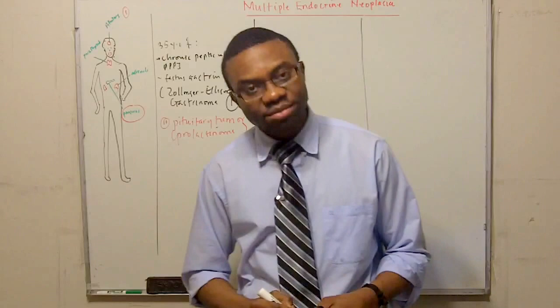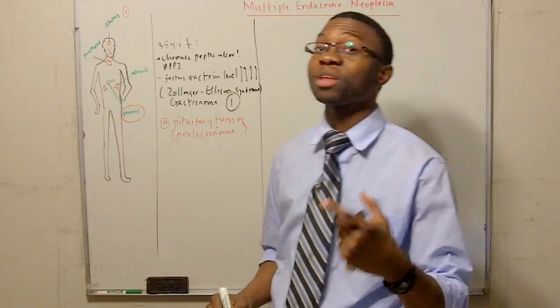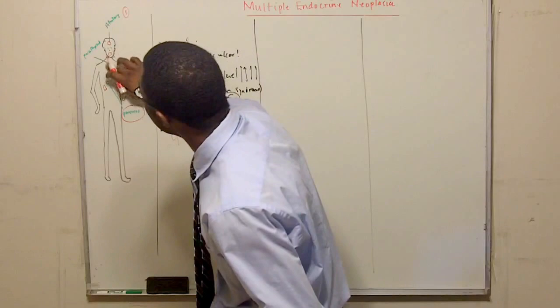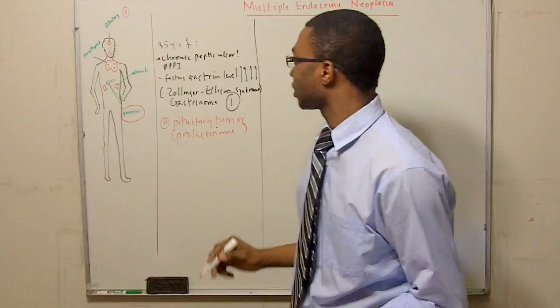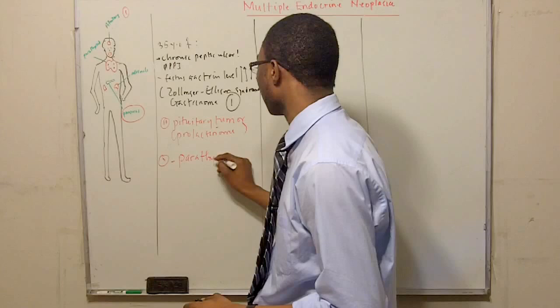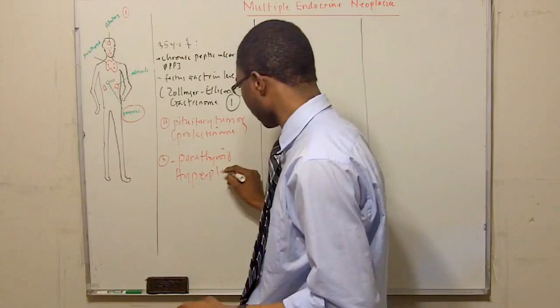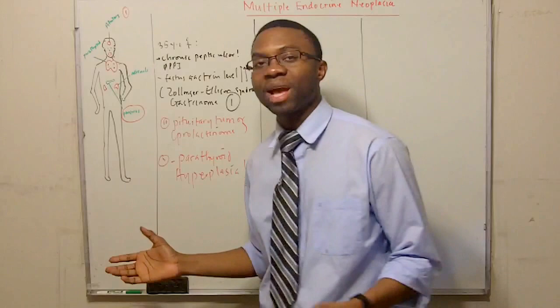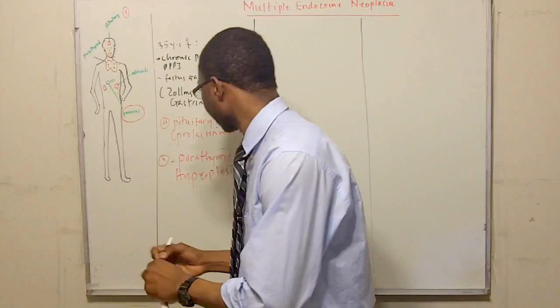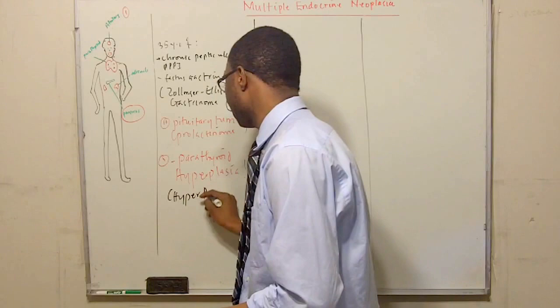So guess what? The only thing left is going to be a parathyroid. She's going to possibly even have another parathyroid hyperplasia right there. So the third thing she's going to develop is a parathyroid hyperplasia. Now, this is not a cancer. It's just hyperplastic. Which means they might be having hyperparathyroidism. That's most likely what she's going to have. Hyper PTH. So if I check out PTH levels, it's going to be elevated.